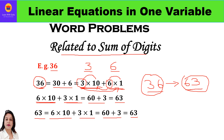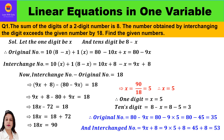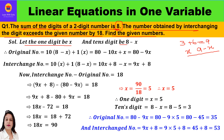Now we shall take up the first question. The sum of the digits of a two-digit number is 8. The number obtained by interchanging the digits exceeds the given number by 18. Find the given number. The sum of digits is 8, so if one digit is x, the other will be 8 minus x. Let the ones digit be x, so the tens digit will be 8 minus x.